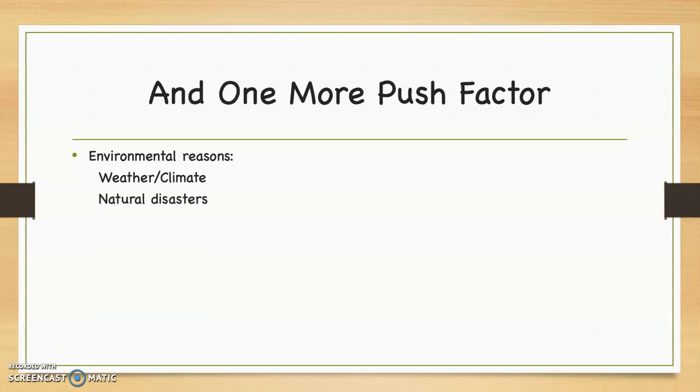Natural disasters can cause people to leave. Things like hurricanes. Think about what happened to Louisiana. Earthquakes could happen in California. Flooding happens all over the place. Fires can drive people out. Mudslides can cause people to leave. And famine can cause people to leave. Now famine might be environmental, but it could also be political, depending on whether it's manipulated by a government or not.